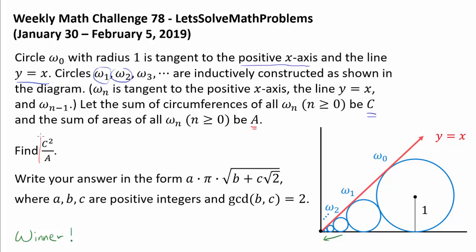We wish to find C² divided by A, and write our answer in the form a·π·√(b + c√2), where a, b, and c are positive integers, and gcd(b,c) = 2.